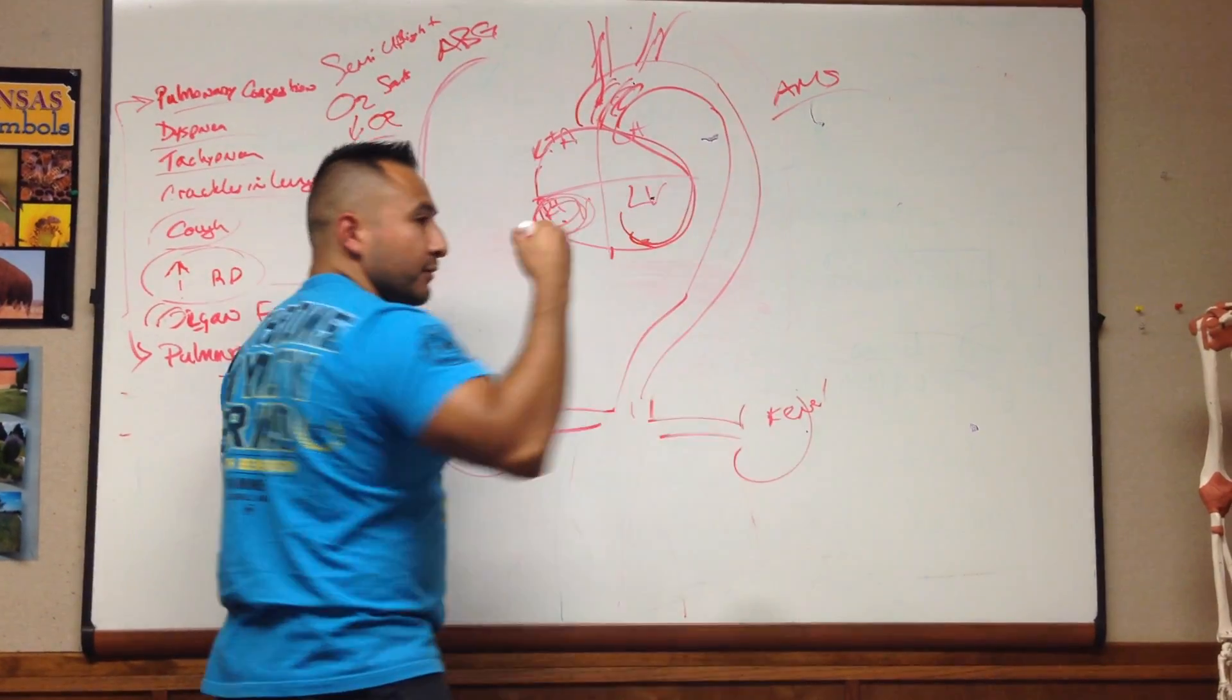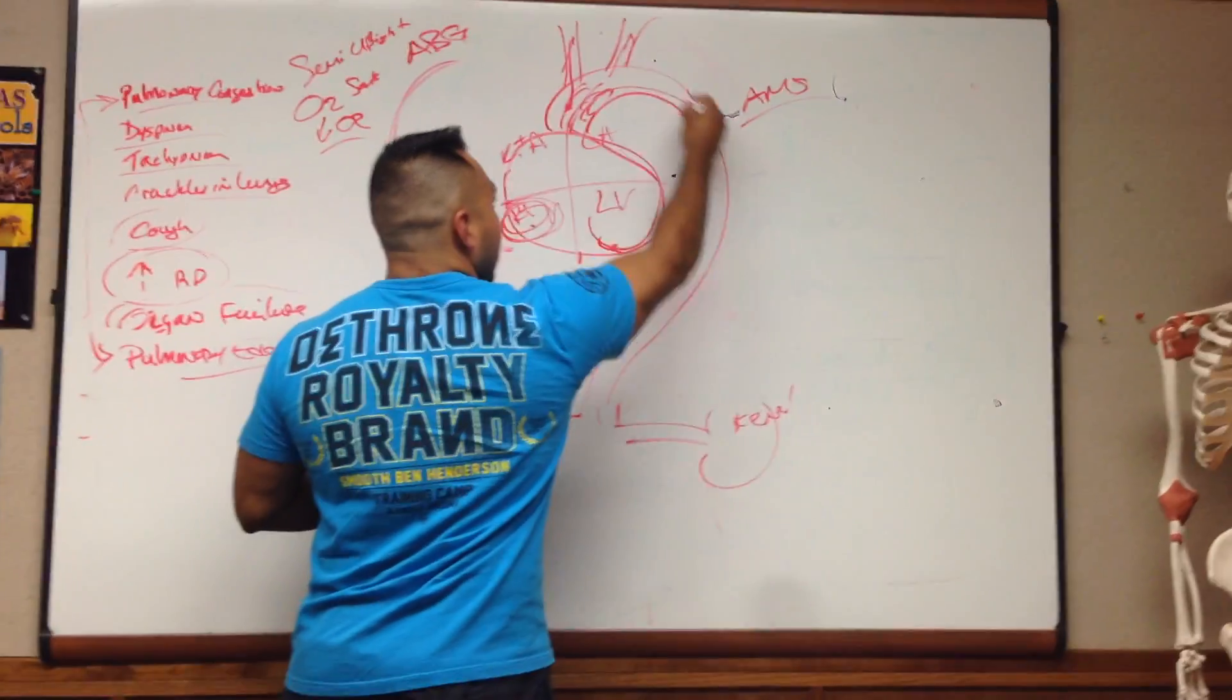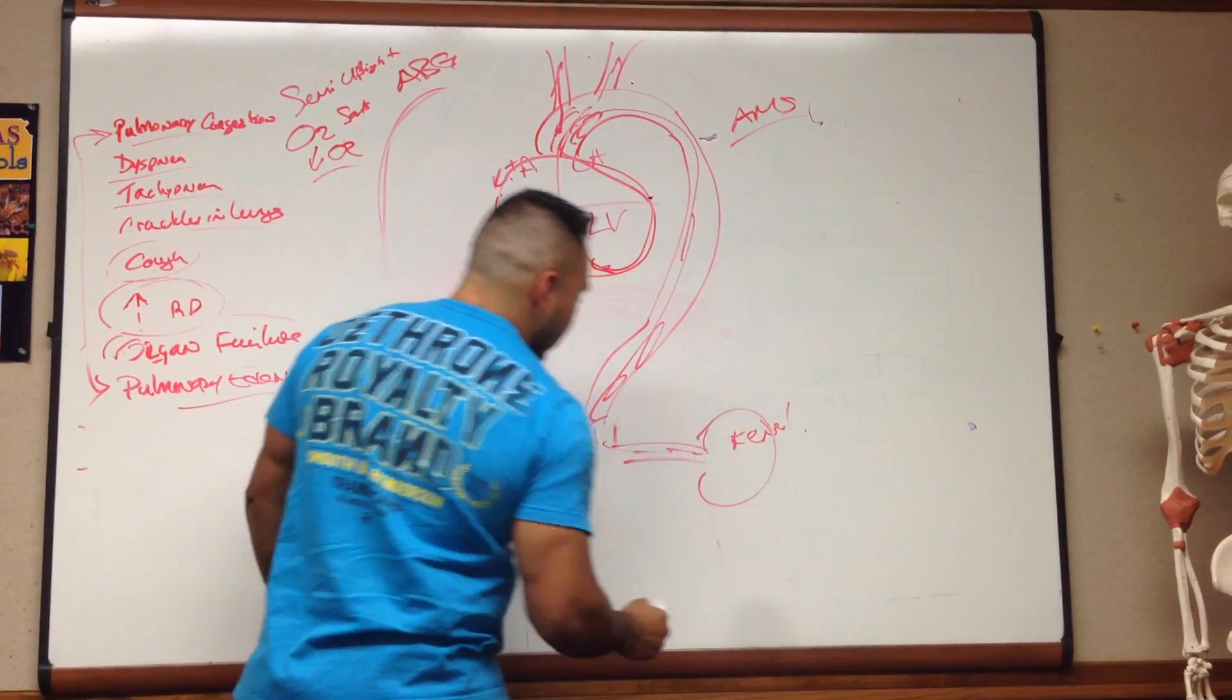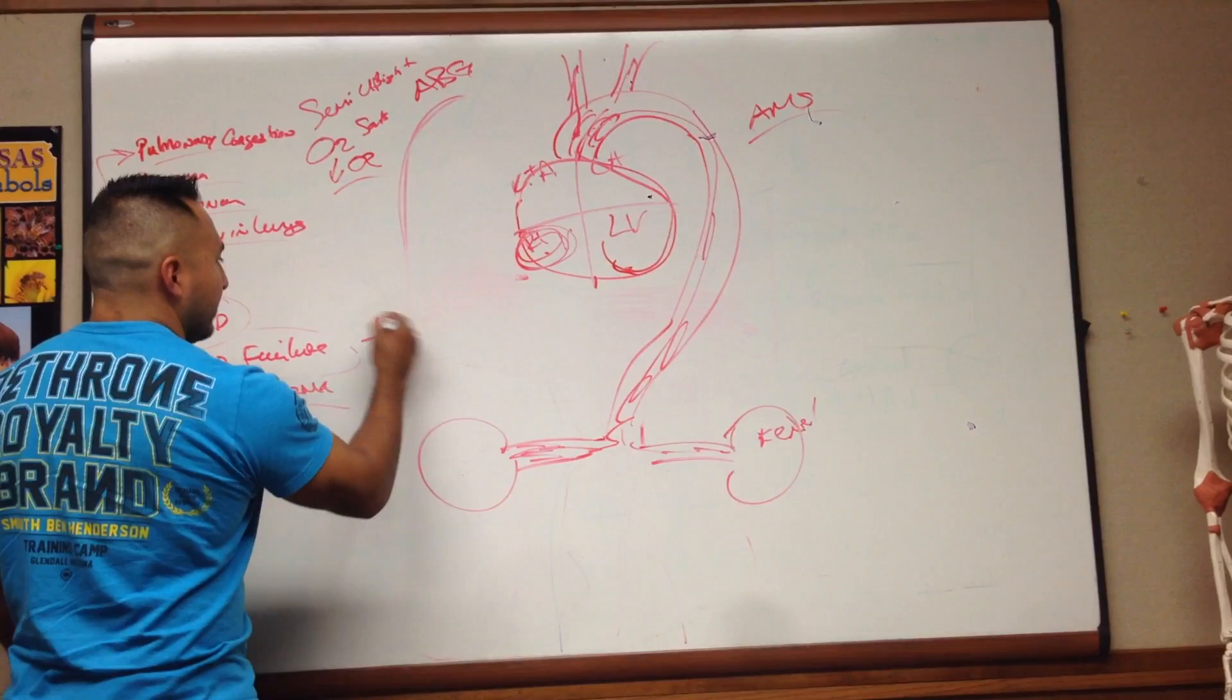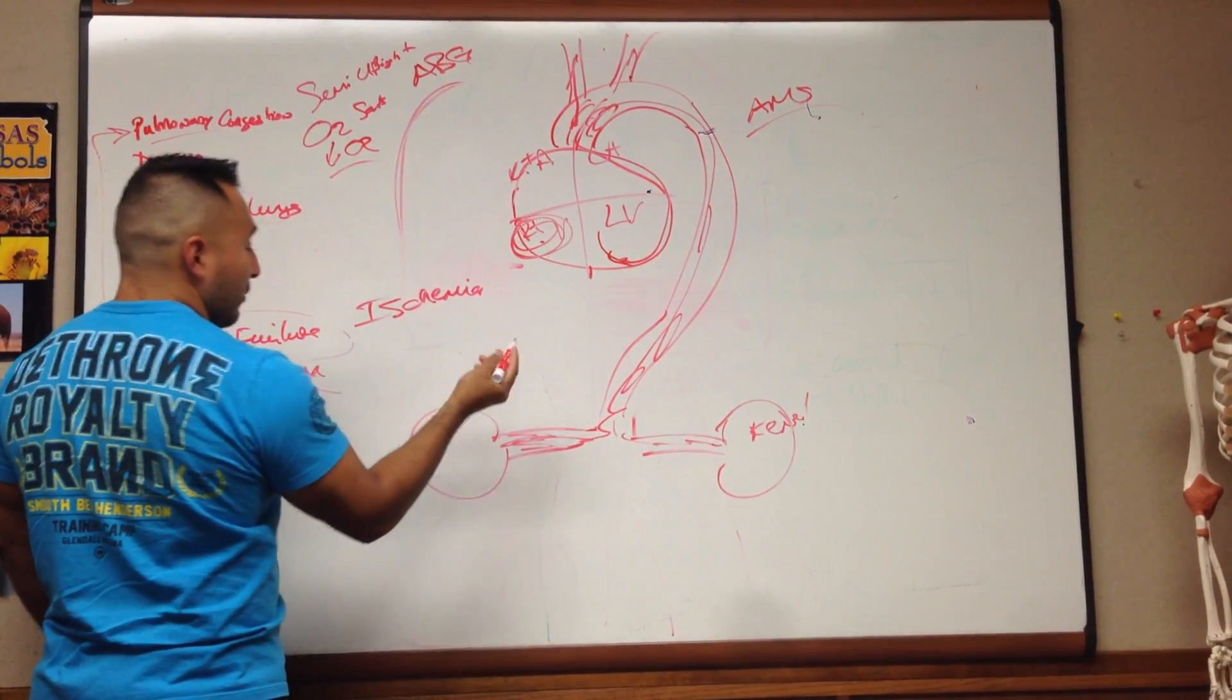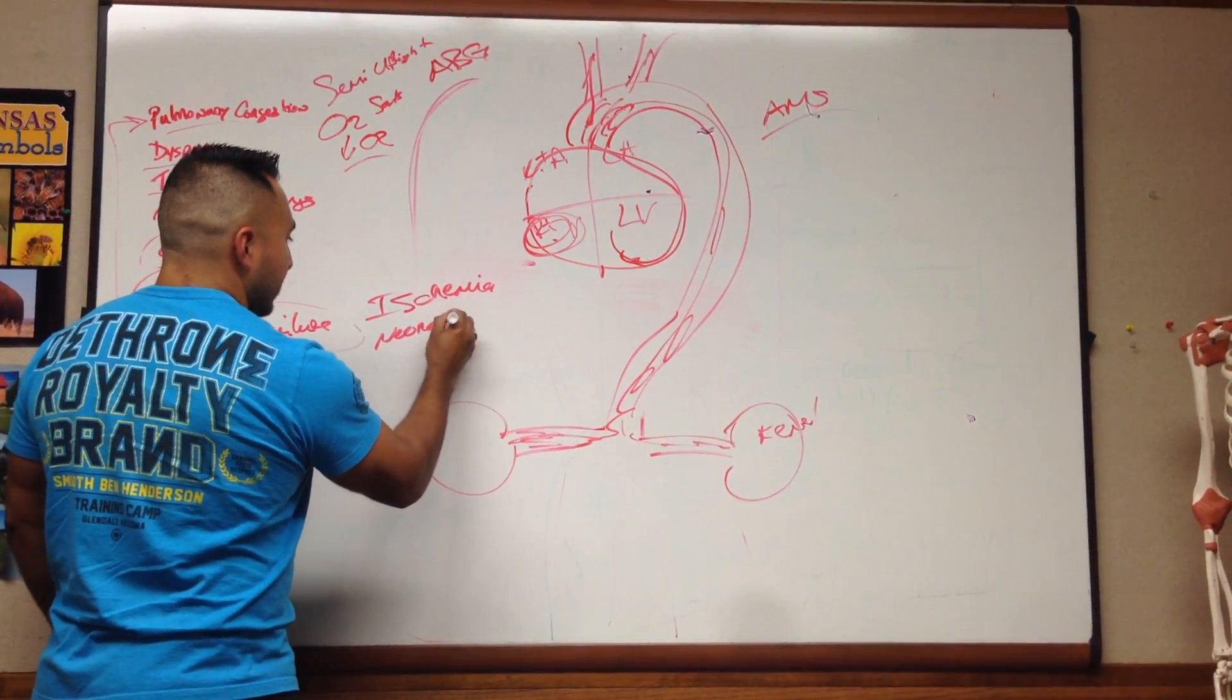So confusion, dizziness, maybe some nausea. If blood cannot come through here to your kidneys, then you have something called ischemia. Or if it's really, really bad, necrosis, death of tissue.